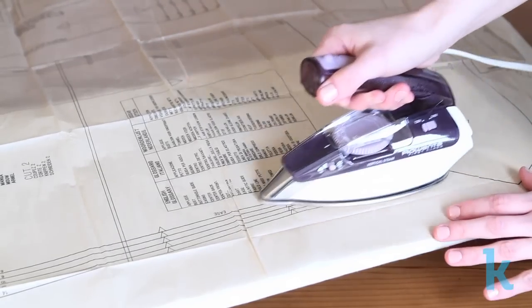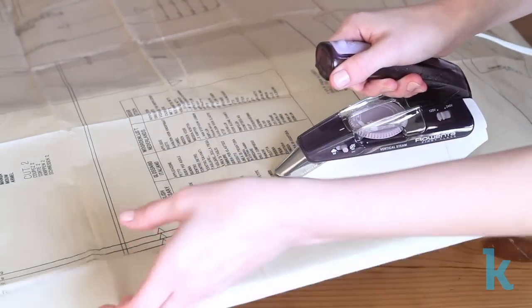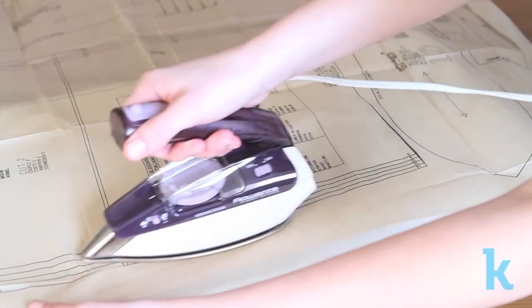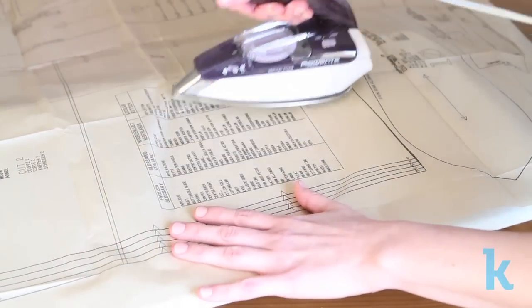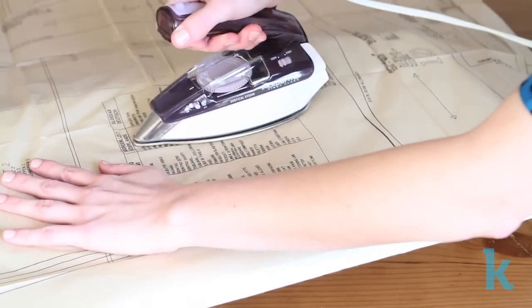First, consult your pattern's instructions to figure out which pieces correspond with the view you want to create. Start by ironing the pattern tissue to get rid of any wrinkles, and make sure you're using a dry iron.